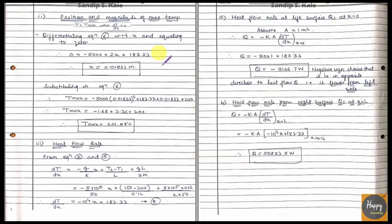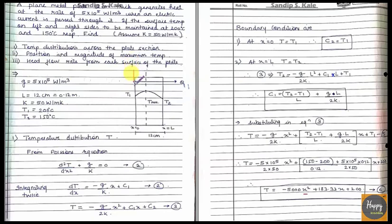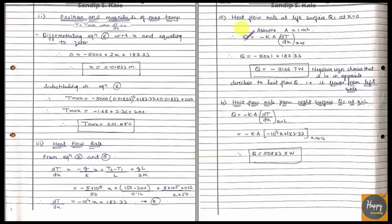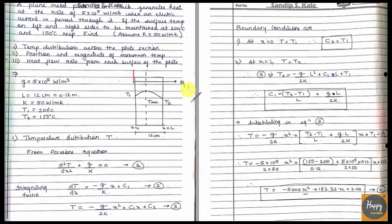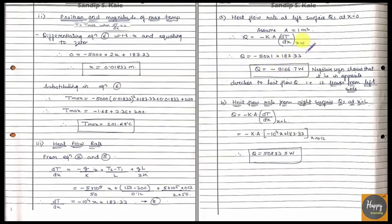Now the last part: find the heat flow rate at the left face and the right face. The formula is Q = −kA·(dT/dx). We need dT/dx at x = 0 and at x = L. To find these, we differentiate the general temperature equation with respect to x.